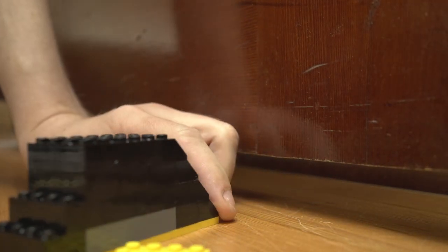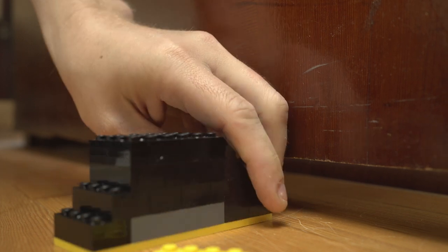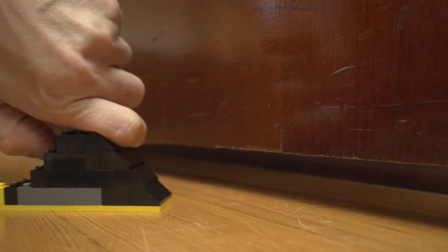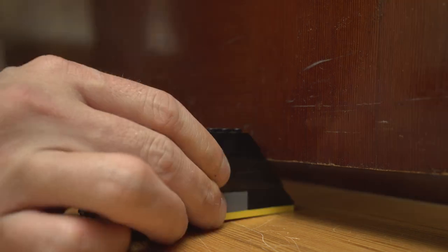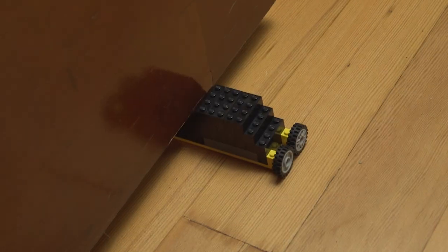You obviously have all kinds of options here, but the idea is to make a simple wedge to stop the door. Now if you find it slides around, just wrangle up a Lego tire or two and slap them right on the back and give it some grip.